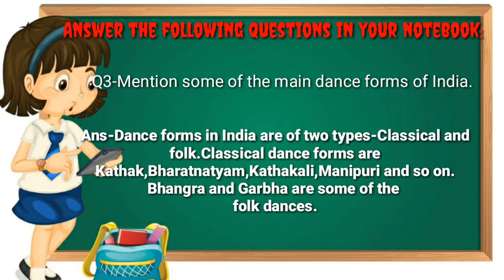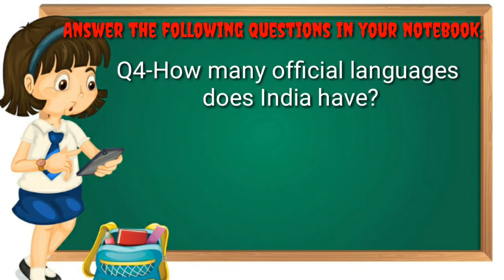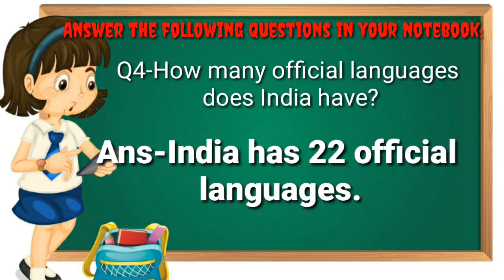Bhangra and Garba are some of the folk dances. Next question, question number four: how many official languages does India have? Tell me, students. A student answers: India has 22 official languages. Yes, you are right.